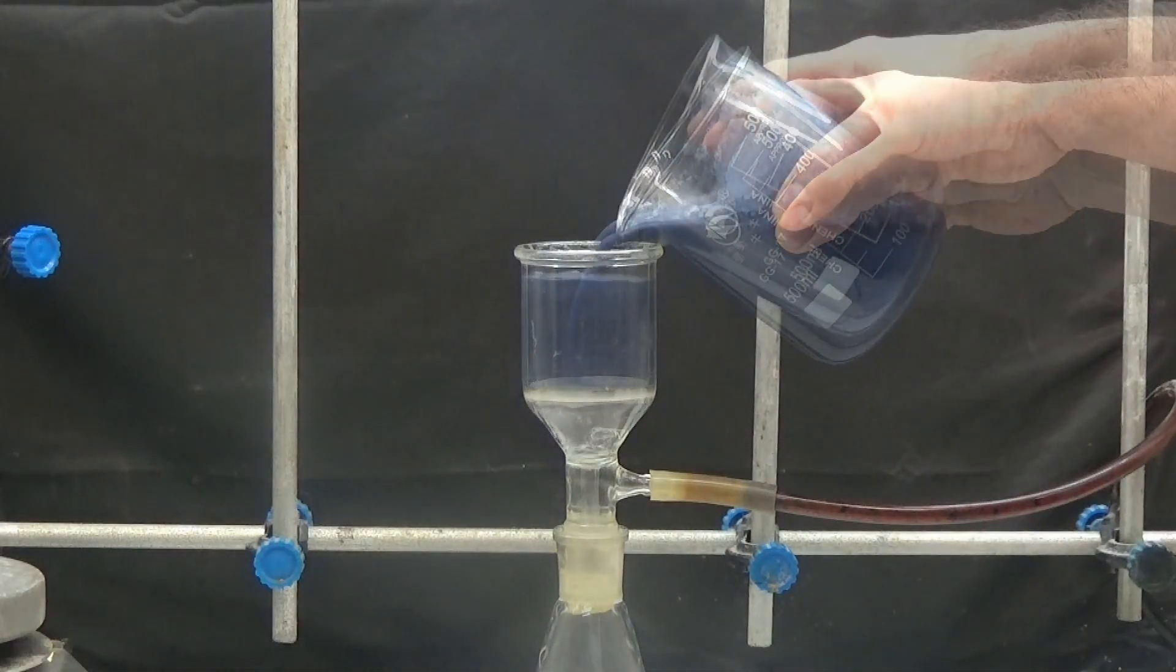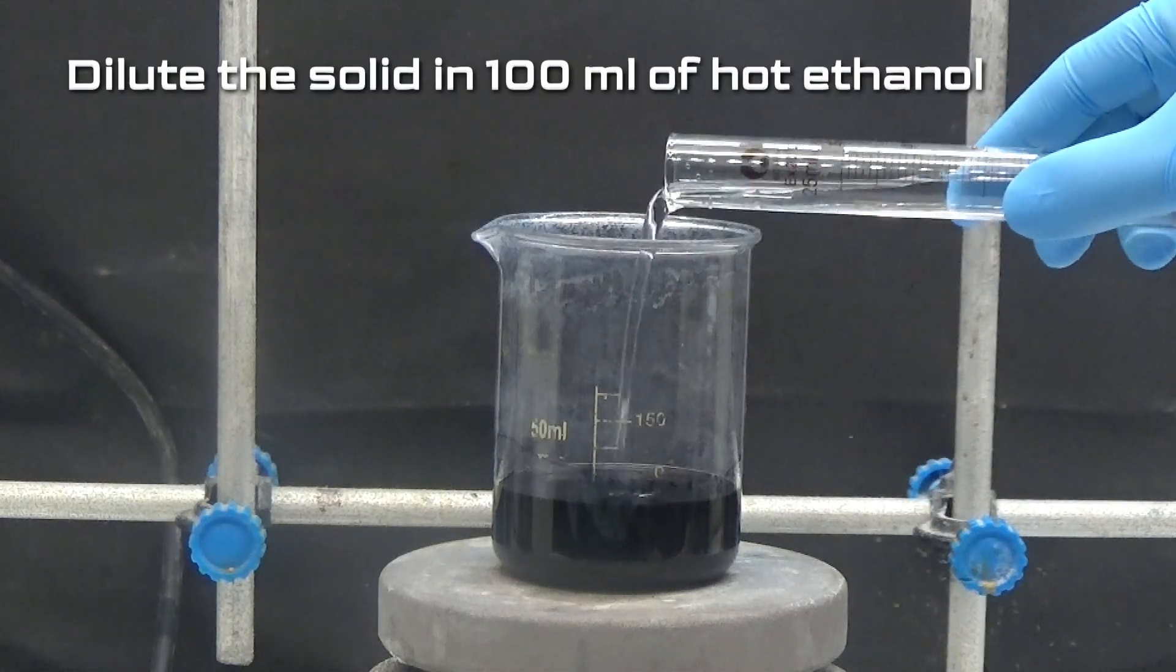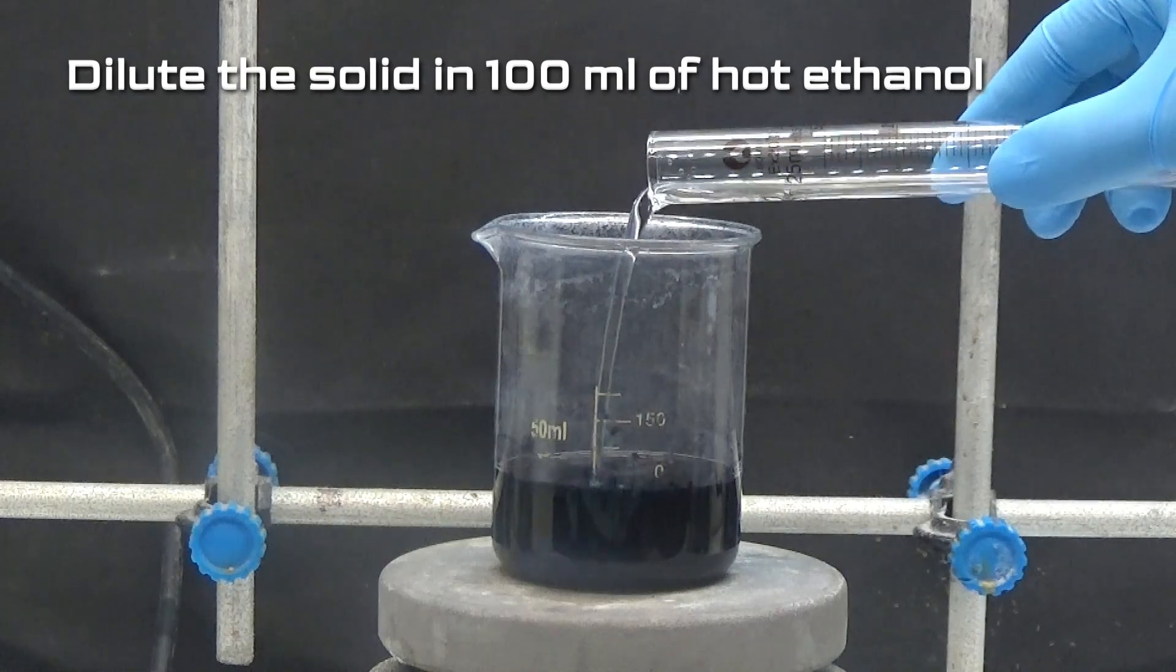Collect the precipitate by suction and wash twice with little water. Dissolve the solid in 100 milliliters of hot ethanol.